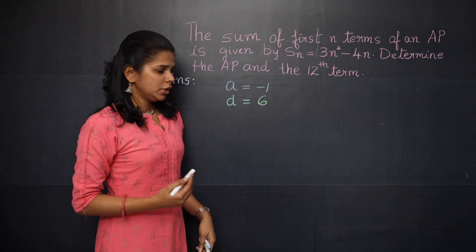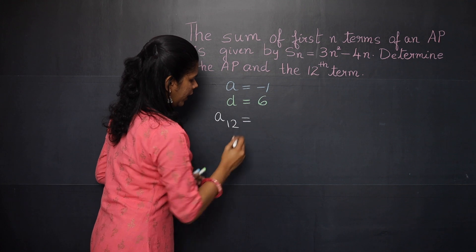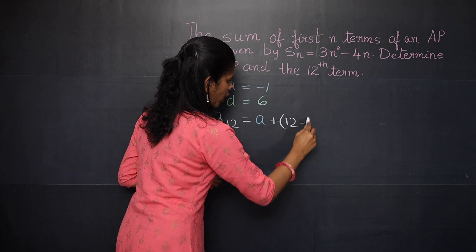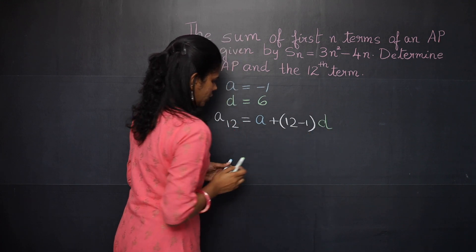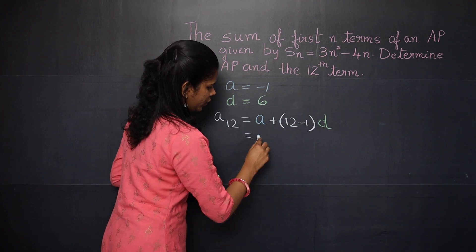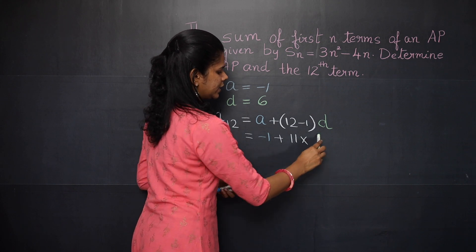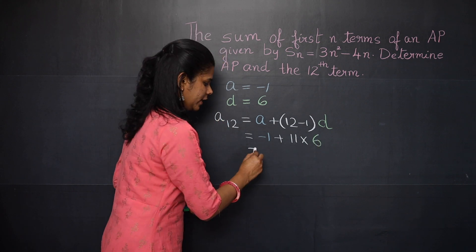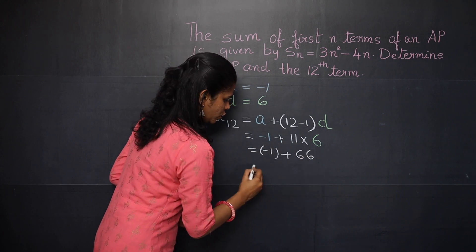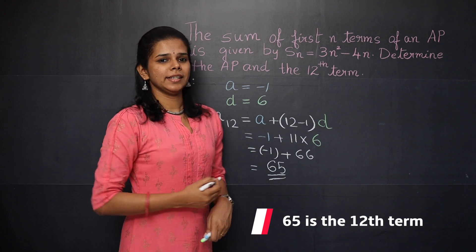Now let's find the 12th term. A12 = a + (12−1)×d = −1 + 11×6 = −1 + 66 = 65. So the 12th term is 65.